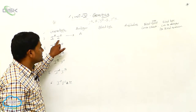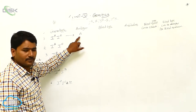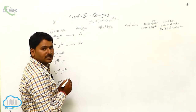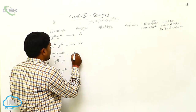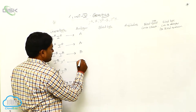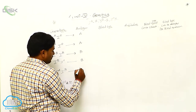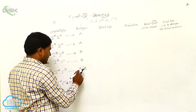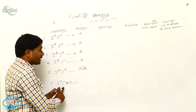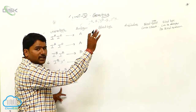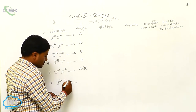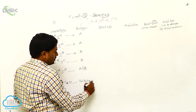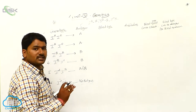Genotype IBIB produces B antigen, and IBI0 also produces B antigen. Genotype IAIB produces both A and B antigens. Genotype I0I0 produces no antigens at all. When A antigen is present, that is blood group A. When B antigen is produced, that is blood group B. When both antigens are present, it is AB blood group. When no antigens are present, that is O blood group.